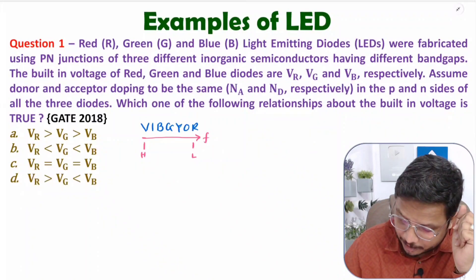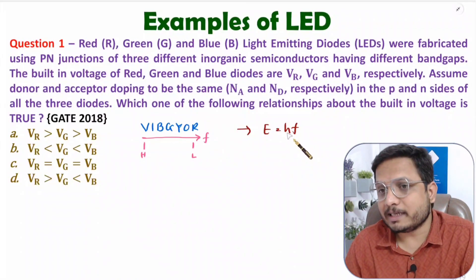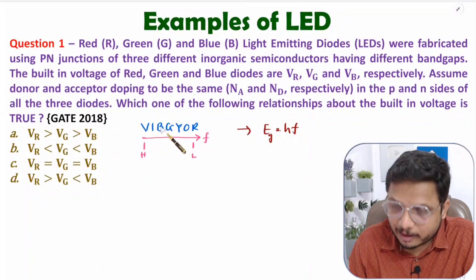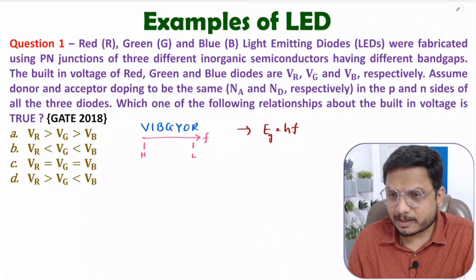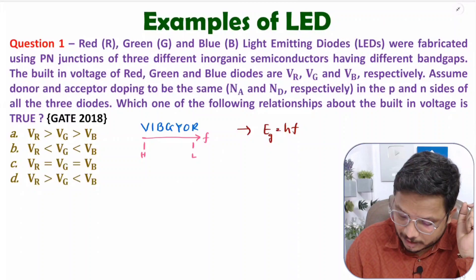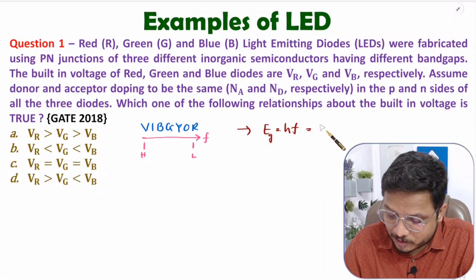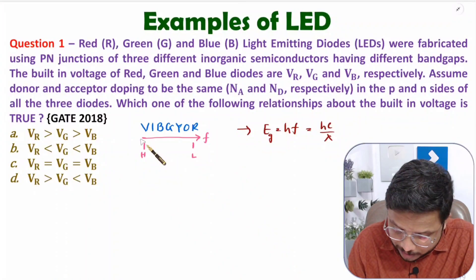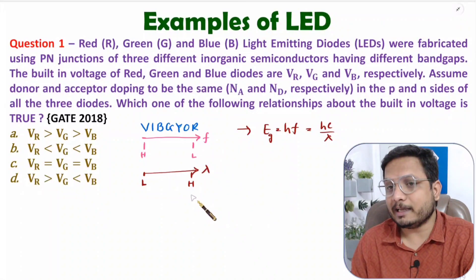Energy band gap Eg = h × f, where h is Planck's constant and f is frequency. So the value of Eg is based on the frequency of the emitted color. Violet has the highest frequency, so its energy band gap is highest. If data is given in terms of wavelength, since frequency = c/λ, we get Eg = hc/λ. Moving toward red means increasing wavelength; violet has the lowest wavelength and red has the highest.